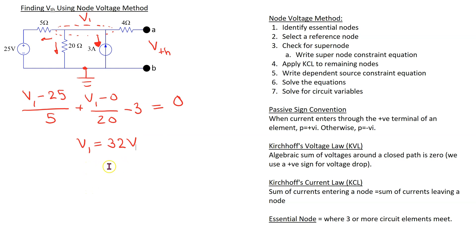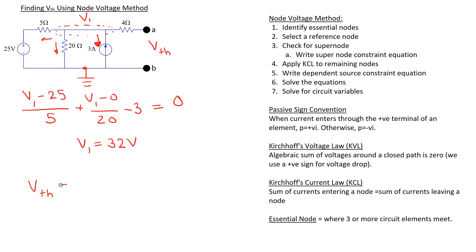We have completed the node voltage method circuit analysis, but this is not the final answer — we need to find VTH. If we look at the given circuit, the voltage at this node is V1. The 4 ohm resistor does not carry any current. Therefore, the voltage at this side must be equal to the voltage on the other side. Since the 4 ohm resistor does not carry any current, VTH is equal to V1, which is 32 volts.